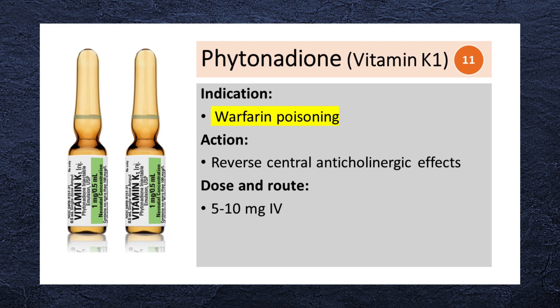Phytonadione, or vitamin K1, is used to reverse the anticoagulant effects of coumarin derivatives such as warfarin. It is typically administered intravenously at a dose of 5 to 10 mg.